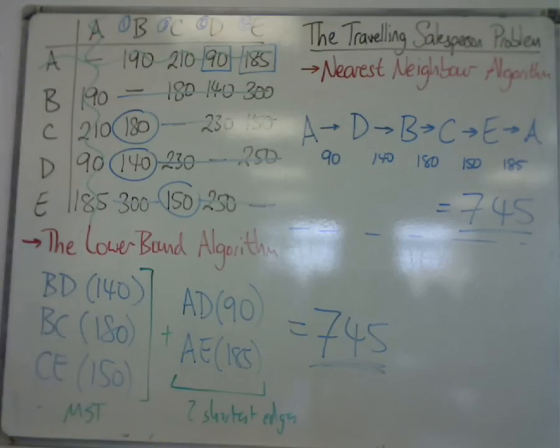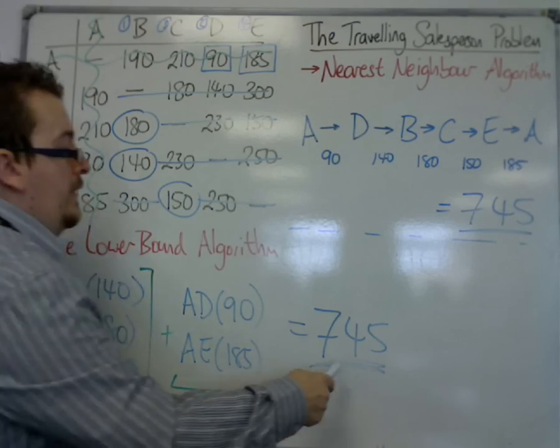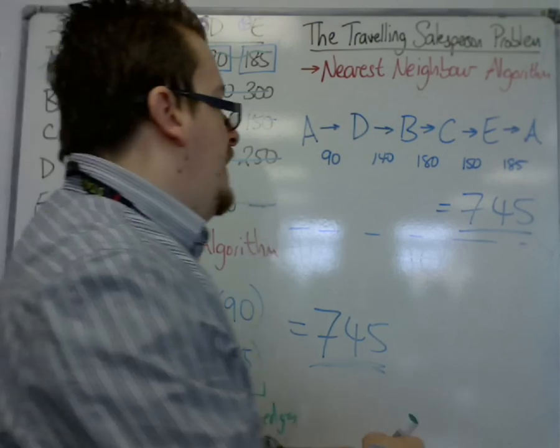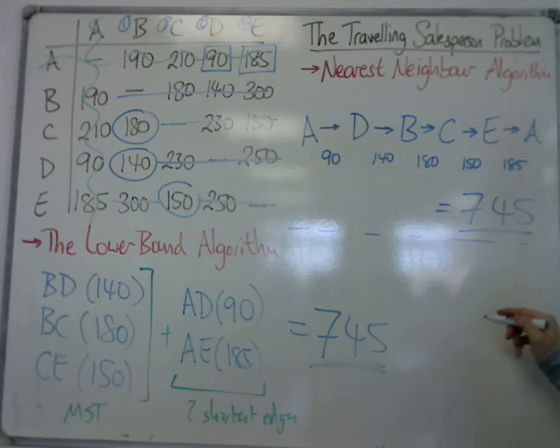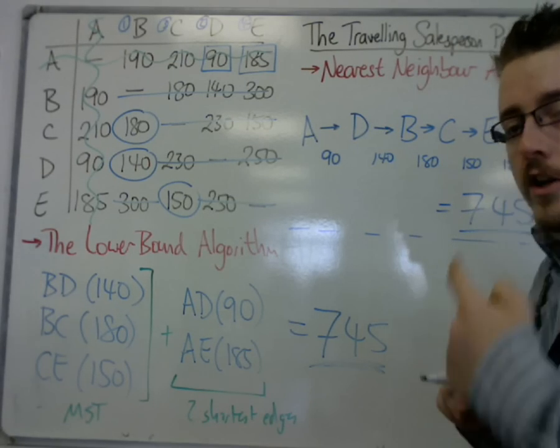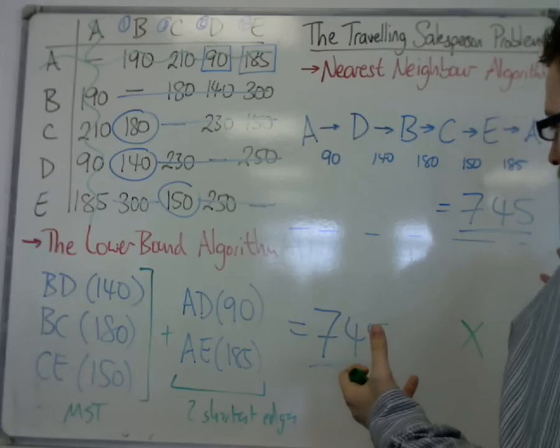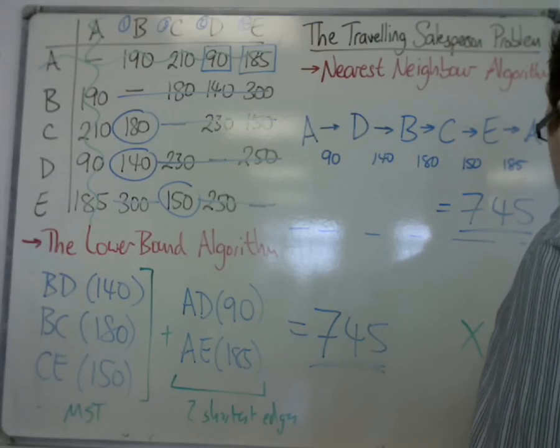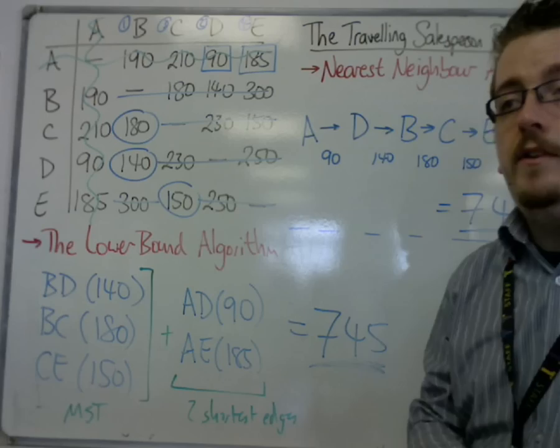Which actually turns out to be exactly the same as my upper bound. So effectively, what you can say is that the optimum solution is bounded between 745 and 745. Which then effectively means that X is equal to 745. So my optimum solution is 745.